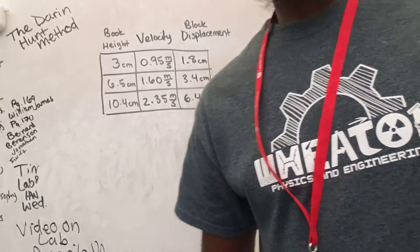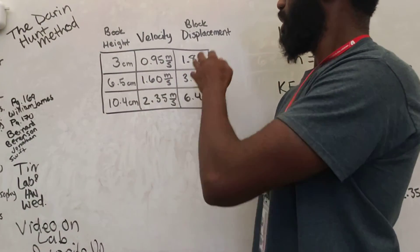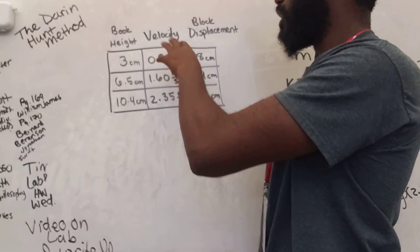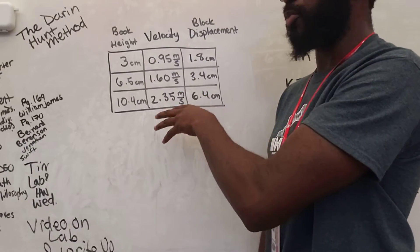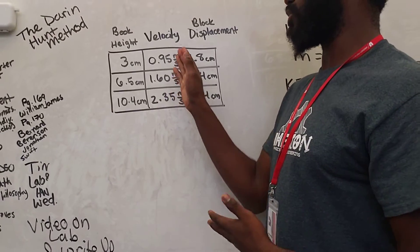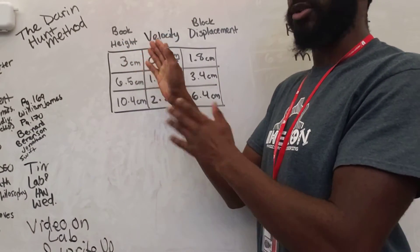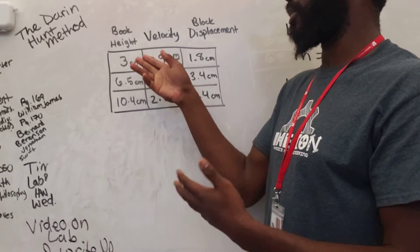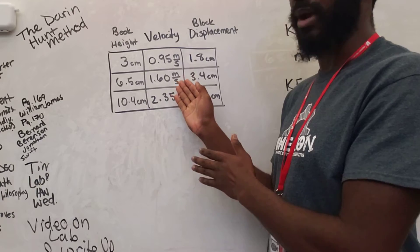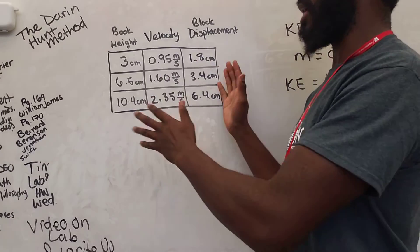So here we've got our data table. We have the heights of the books that I measured, my block's displacement that we measured as well. And here I have the velocities from my previous experiment that I copied and brought here. These velocities are lined up so that they correspond to the correct ramp height: when the ramp was 3 centimeters high, this was my velocity; 6.5 centimeters high, this was my velocity; and the same for 10.4 centimeters high.